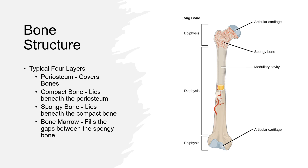Now let's talk about bone structure. Bone structure can be divided into four typical layers: the periosteum, compact bone, spongy bone, and bone marrow. The periosteum covers the bones and contains blood vessels, nerves, and cells essential for bone growth and repair. The compact bone is a dense and strong layer that gives bones their hardness and strength. The spongy bone is a porous and lattice structure containing bone marrow, which produces blood cells and immune cells.